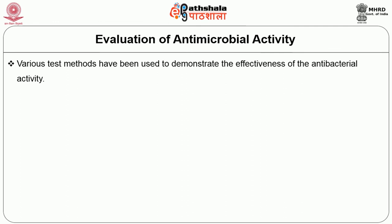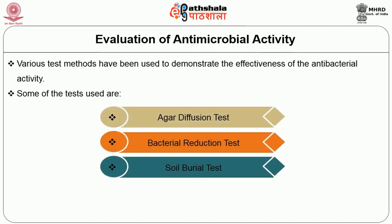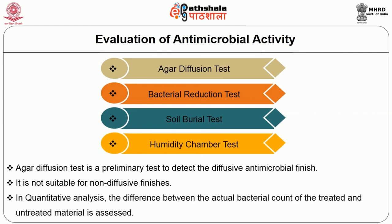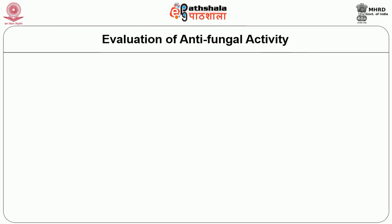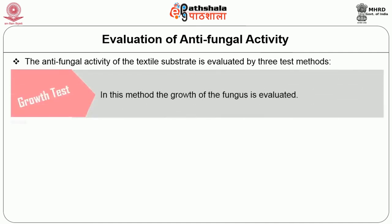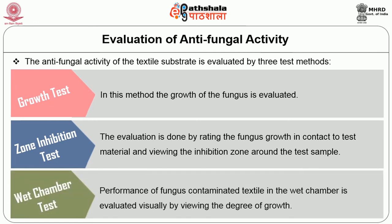Various test methods have been used to demonstrate the effectiveness of antibacterial activity. Some of the tests used are agar diffusion test, bacterial reduction test, soil burial test, and humidity chamber test. Agar diffusion test is a preliminary test to detect diffusive antimicrobial finish; it is not suitable for non-diffusive finishes. In quantitative analysis, the difference between the actual bacterial count of treated and untreated material is assessed. The antifungal activity of the textile substrate is evaluated by three test methods: growth test, zone inhibition test, and wet chamber test.